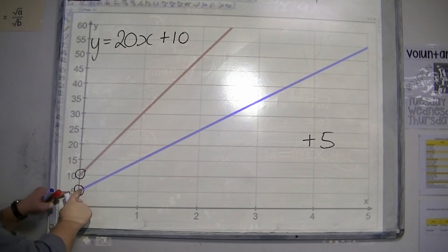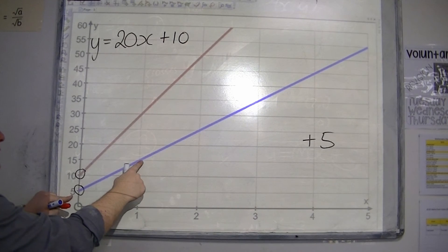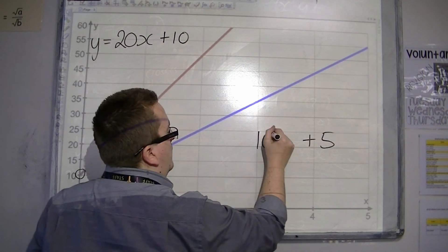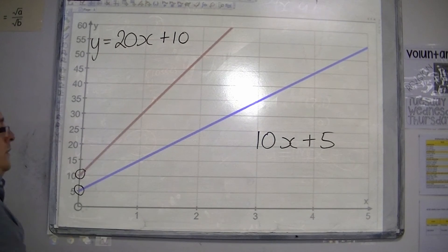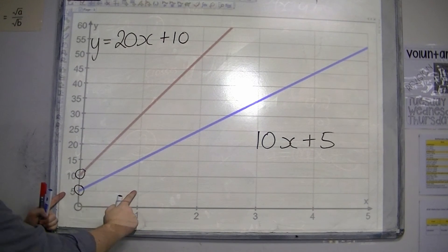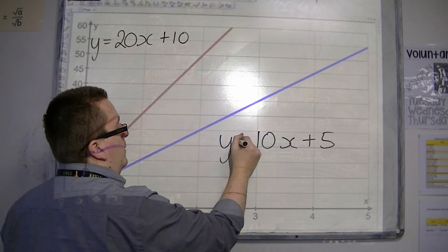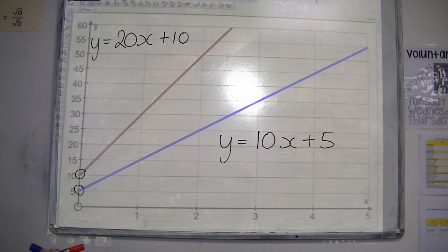And for every one along, I'm going up 5, 10. So I've got 10 in front of the x. So the gradient is 10. One along, 10 up. So that is the equation of the blue line.